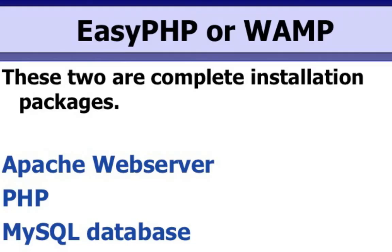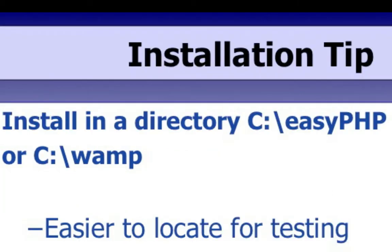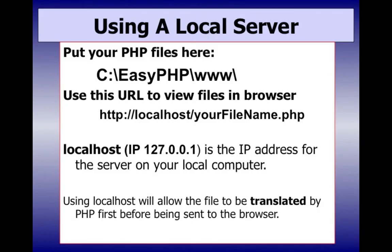When you install EasyPHP, you get an Apache web server, you get PHP, and a MySQL database. The reason I had you put it in the root — C colon — is it's much quicker to get to and easier to locate for testing. Depending upon where you install PHP, you're going to want to find that folder and look for the www folder. The www folder is equivalent to the public_html folder on your cPanel. To view it, you just type in localhost or the IP address 127.0.0.1.